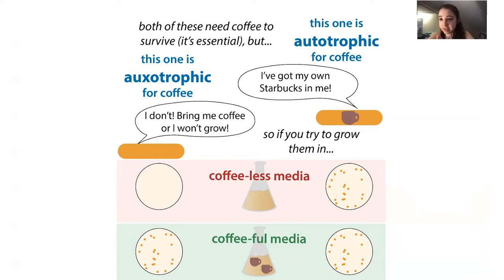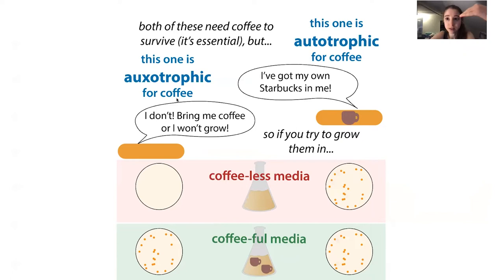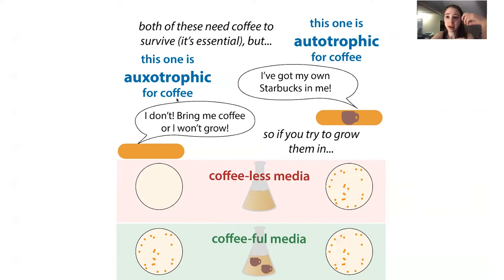Another thing that can get complicated is that papers often talk about 'rescuing a phenotype.' Sometimes you might think they're recreating a phenotype, but they're actually talking about rescuing cells from a phenotype. If a phenotype causes a problem, they can rescue the phenotype by doing something to change or compensate so that the cells don't have a problem. The terminology can get really confusing, so make sure you're thinking carefully about what the paper is talking about. Use your critical thinking skills, especially if that's not your area of expertise.